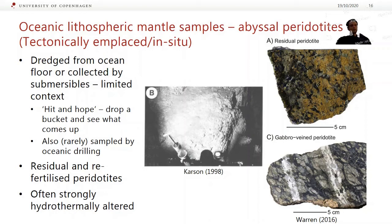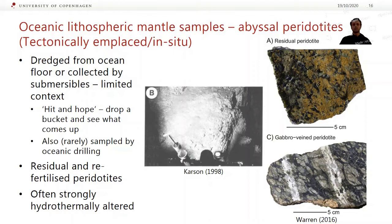We also have abyssal peridotites. These may be tectonically in place, so they might be in situ. Generally, these are just dredged from the ocean floor. You can send down submersibles to get a little bit more context, but you can't get a lot of rock that way and it's very expensive. A lot of these are just dropping a bucket on a many-kilometer-long cable, dragging it along the seafloor and seeing what you turn up — so you have very little context. There are also some oceanic drilling projects, which give you a bit more context and a vertical section through the crust and uppermost mantle, but they're more expensive and there haven't been so many.